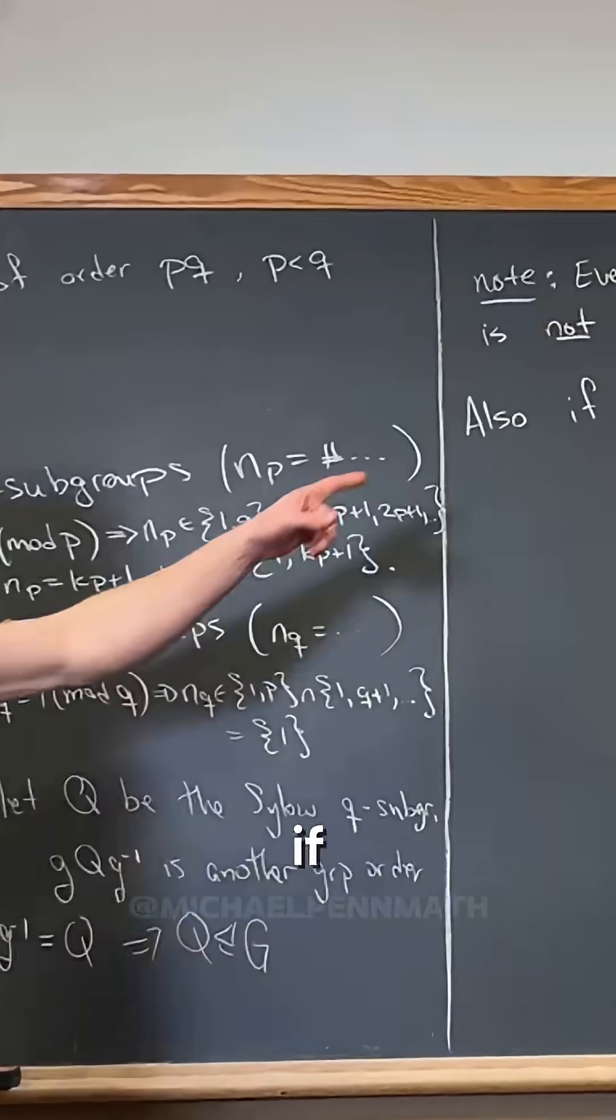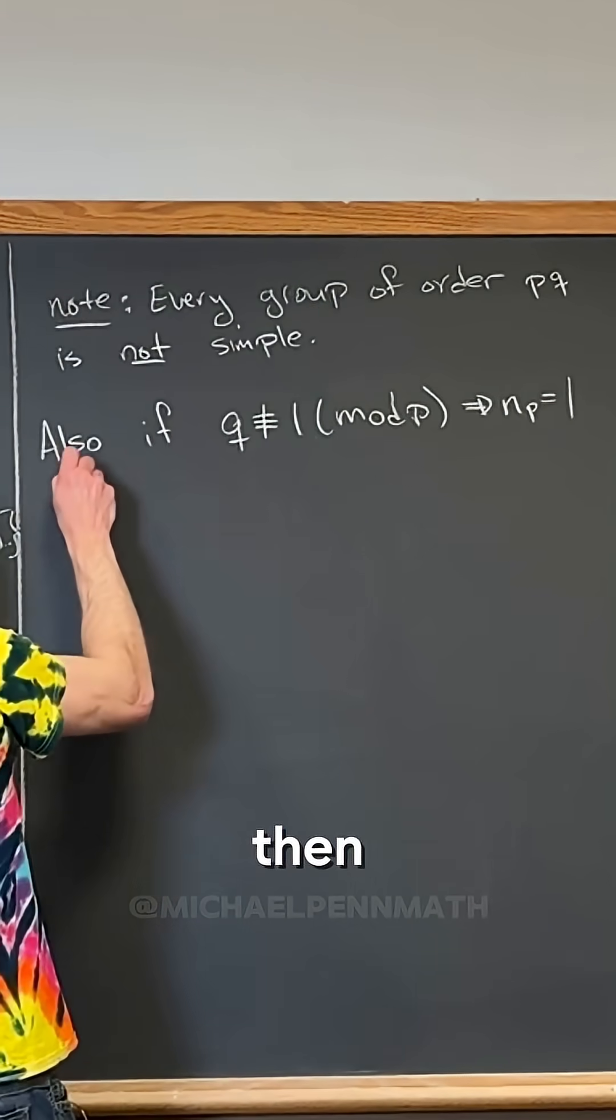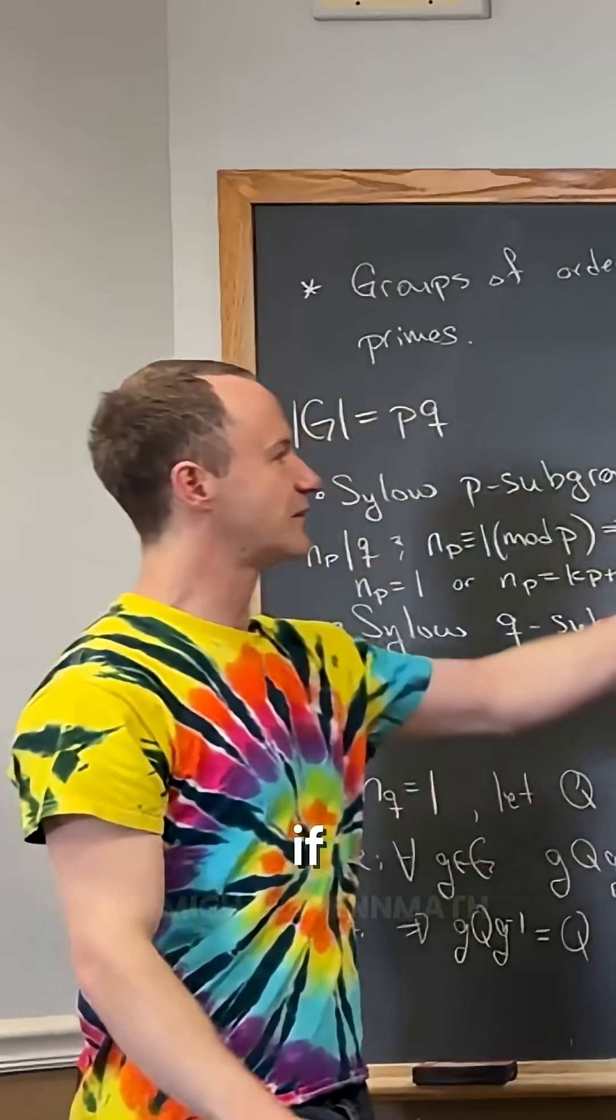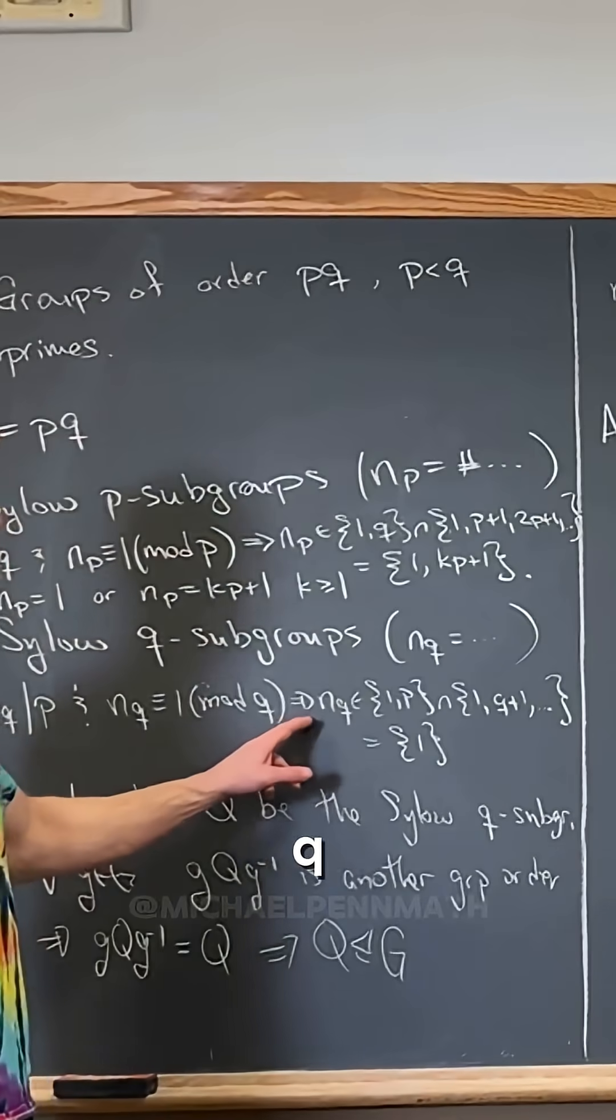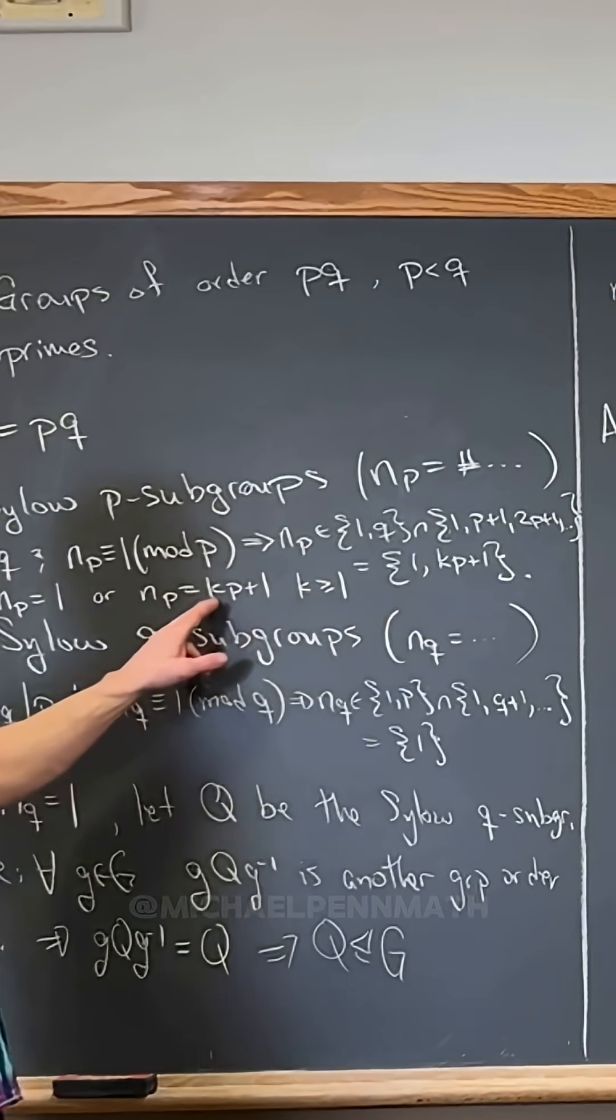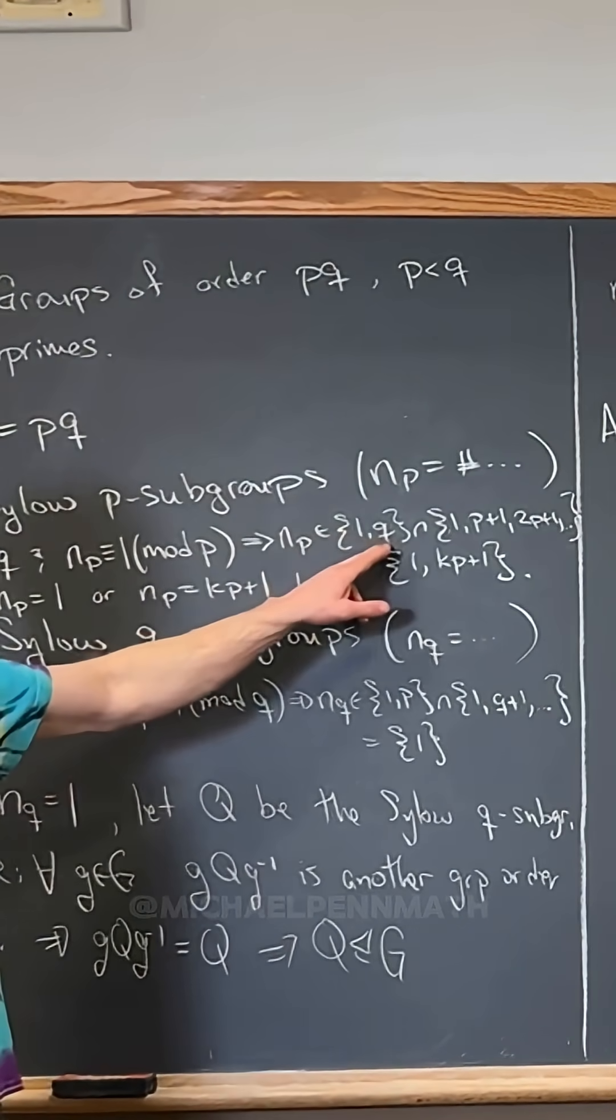Right here, so if this is the case, then P is also normal. Now if q is incongruent to 1 mod p, then that means q cannot be one of these, right? So np is either 1 or q.